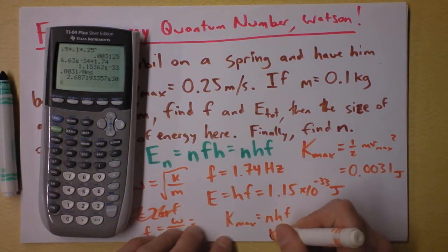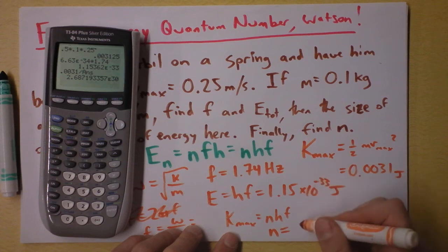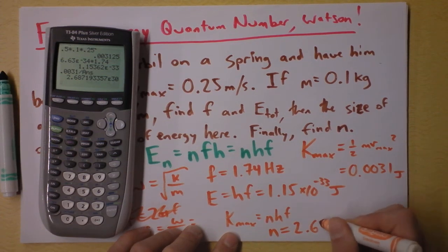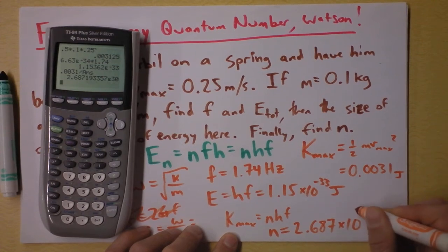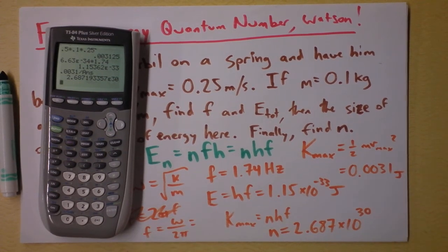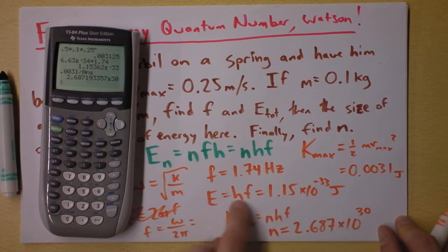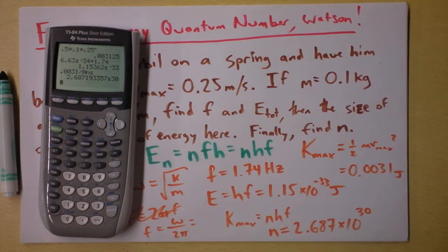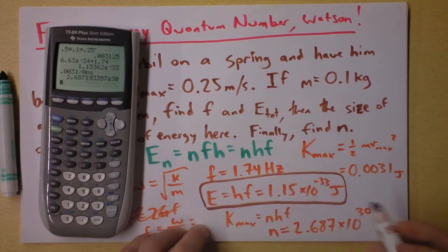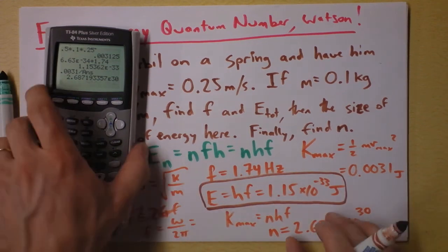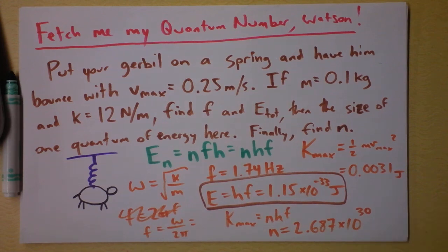That's a huge quantum number! We have billions of billions of billions of multiples of this amount of energy right here. That's why you don't see quantum physics in your everyday life, because H is so pathetically small. You have billions of billions of billions of quanta of energy in just a simple hamster bouncing up and down. Wow.